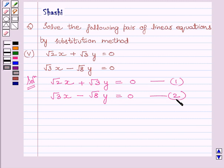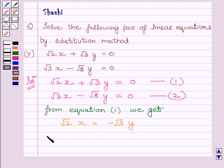From equation 1, we equate the value of x and get root 2x is equal to minus root 3y, which implies x is equal to minus root 3 upon root 2y.